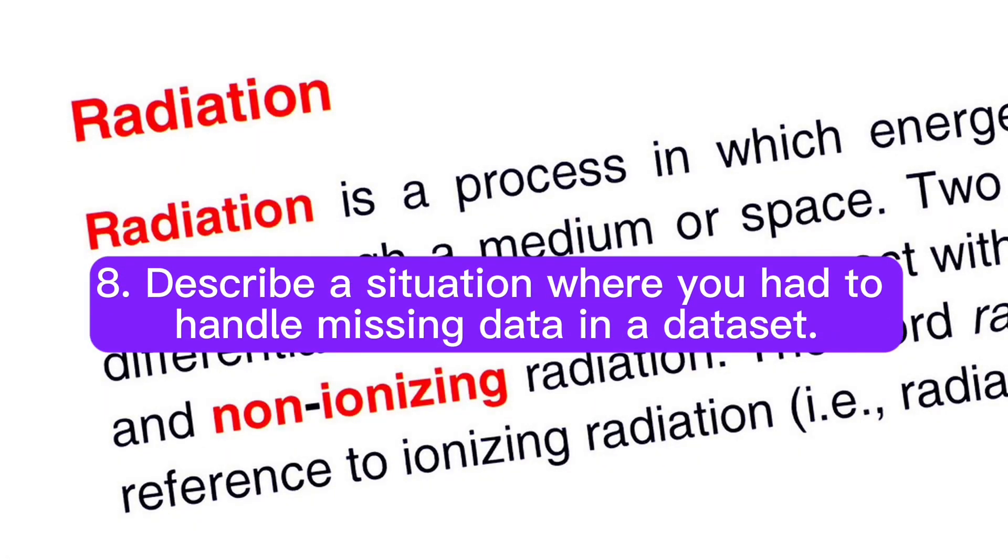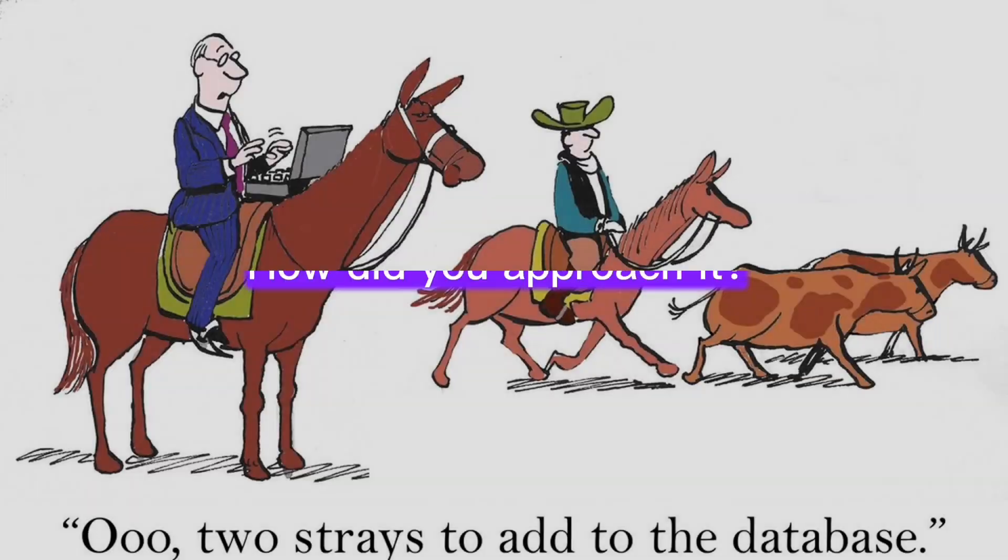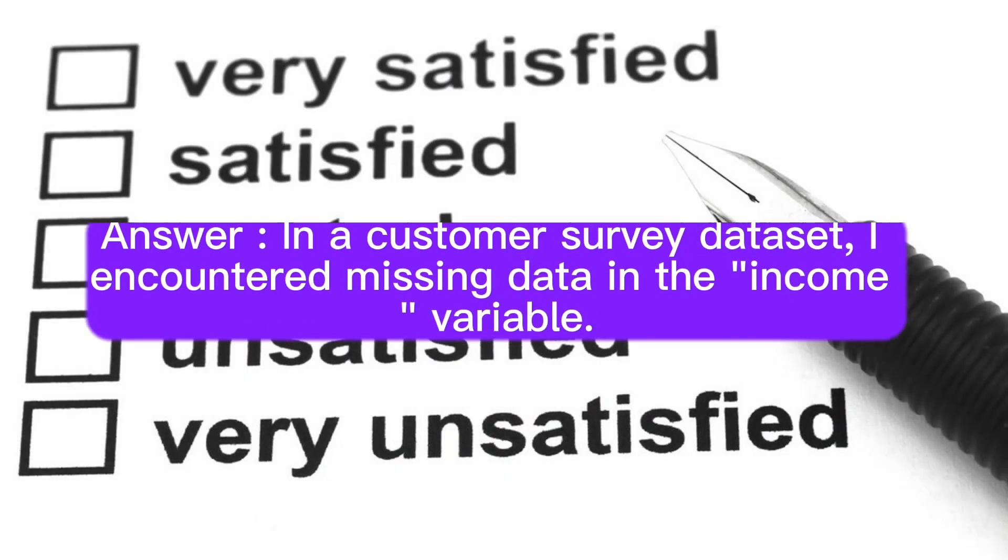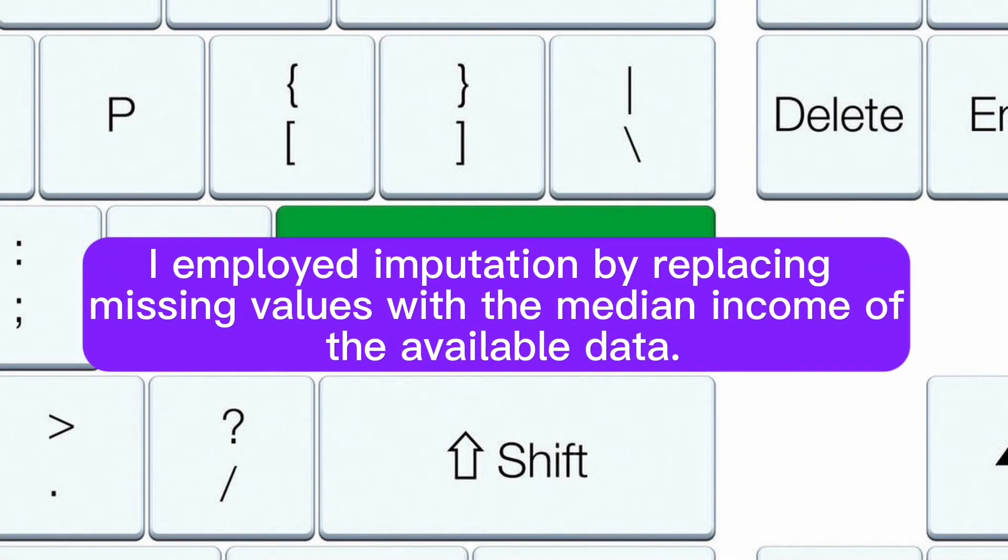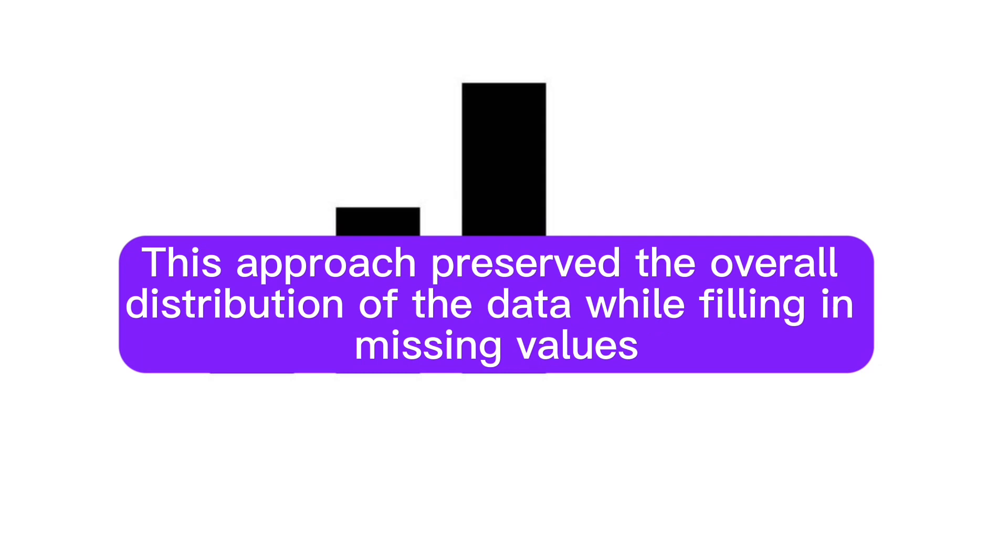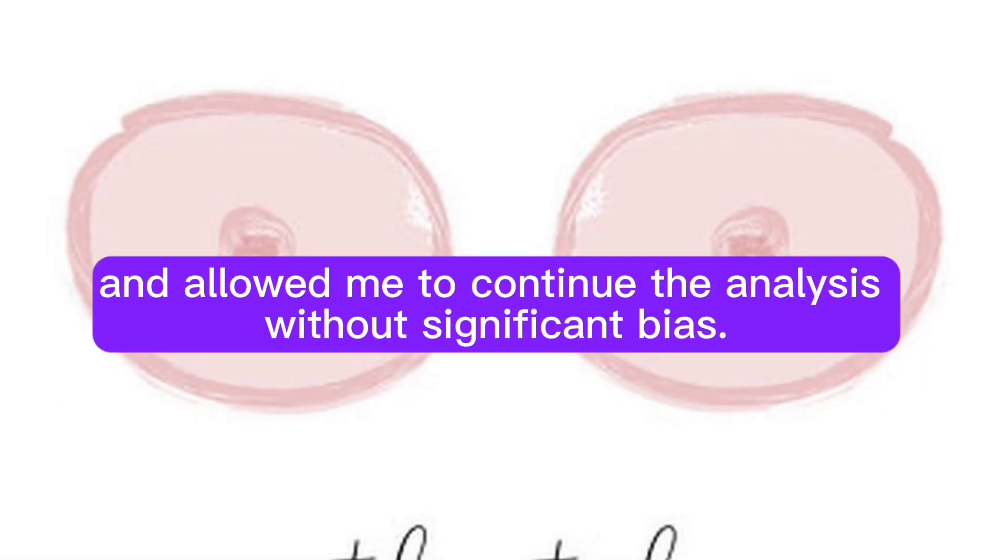Question 8: Describe a situation where you had to handle missing data in a dataset. How did you approach it? Answer: In a customer survey dataset, I encountered missing data in the income variable. I employed imputation by replacing missing values with the median income of the available data. This approach preserved the overall distribution of the data while filling in missing values and allowed me to continue the analysis without significant bias.